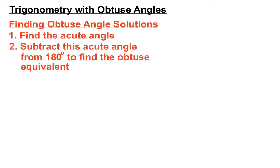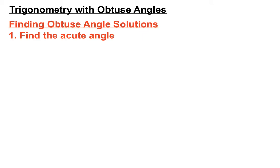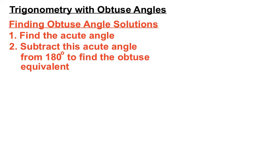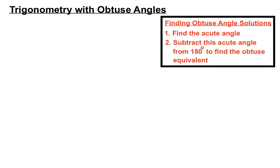Every now and again they want us to find an obtuse angle solution. Our answer needs to be in the form of an obtuse angle. Often it involves an acute angle as well. Step one will be to find the acute angle and we can find the equivalent obtuse angle by taking it away from 180. Let's remember that off to the side there. Let's see an example.